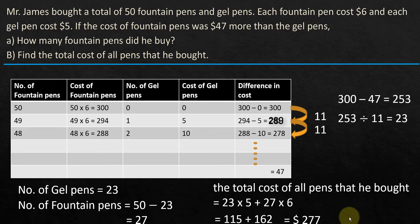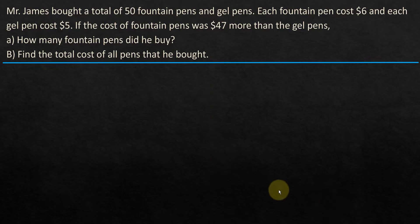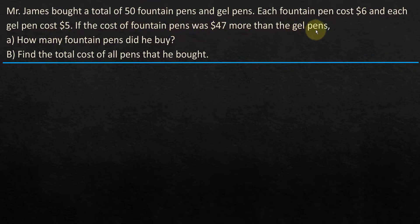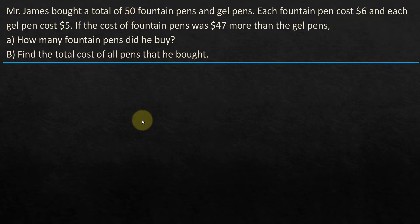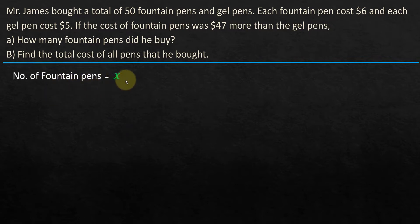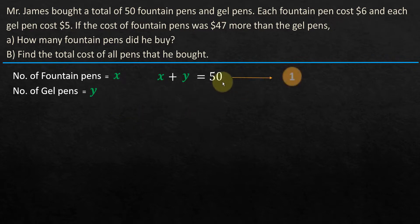Hope that was easy. Now let's move on and try to solve the same problem using algebra. Mr. James bought a total of 50 fountain pens and gel pens. Each fountain pen cost $6 and each gel pen cost $5. If the cost of fountain pens was $47 more than the gel pens, how many fountain pens did he buy, and find the total cost. We know the total number of pens is 50. Let the number of fountain pens be x and the number of gel pens be y. That gives us our first equation: x plus y equals 50.